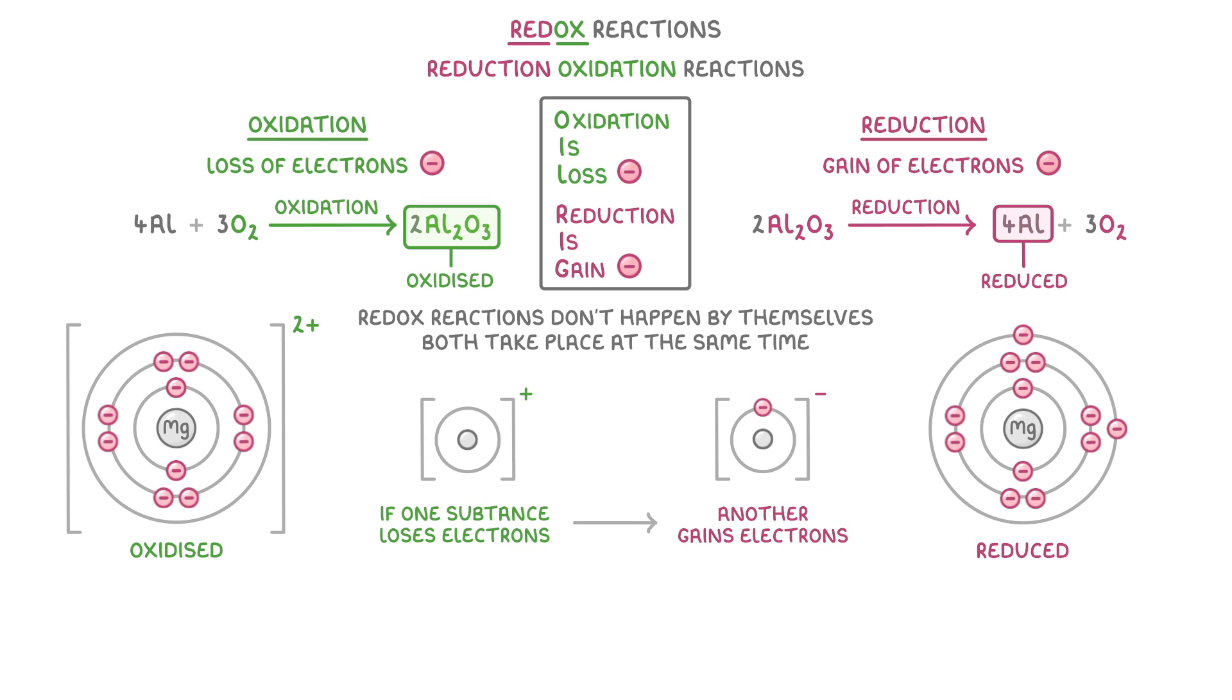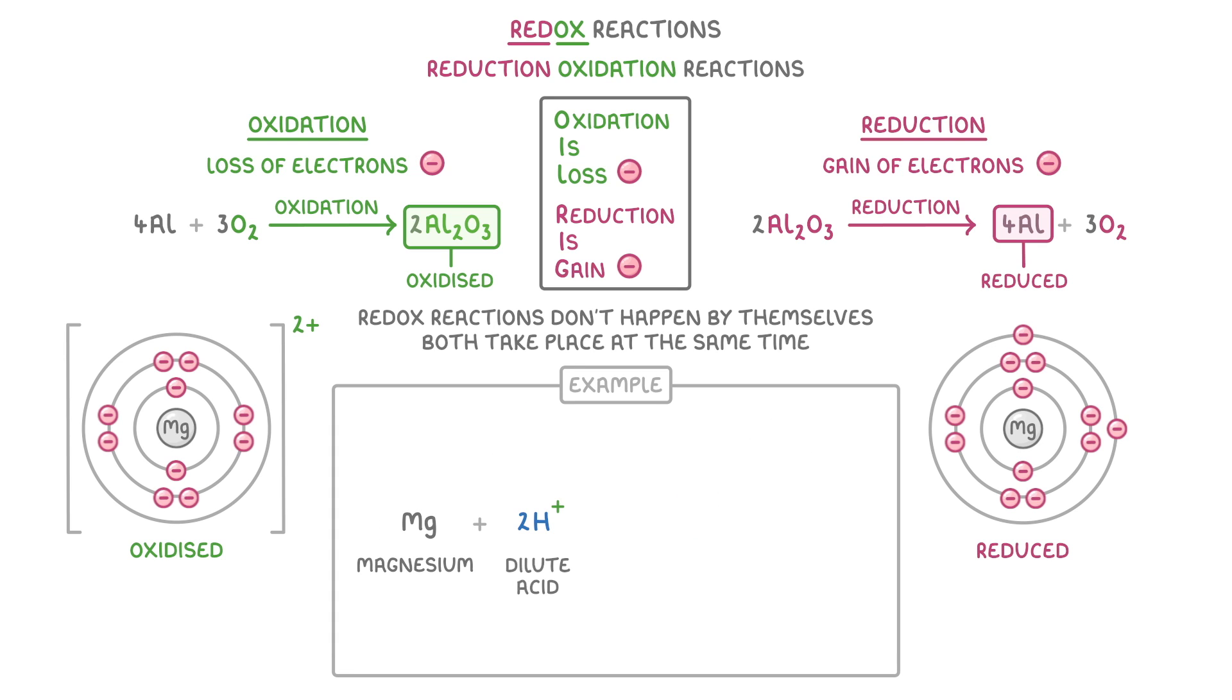For example, if we react some magnesium with a dilute acid, which we can represent as H+, because that's the important part of an acid, then the magnesium atoms will lose two electrons and be oxidised, forming magnesium 2+ ions. Meanwhile, the hydrogen ions will gain those electrons and so be reduced to neutral hydrogen atoms in the form of hydrogen gas.